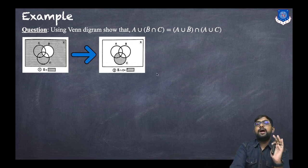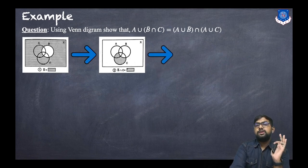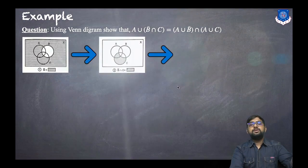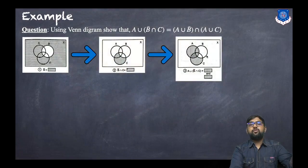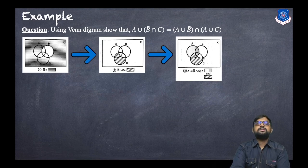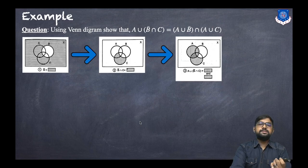The third step is to find A ∪ (B̄ ∩ C). We take that portion and union with A, giving us this shaded region — that is the left-hand side. Now in the same manner we will draw the right-hand side.